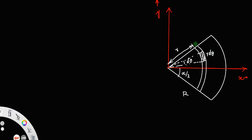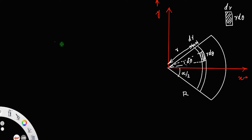Let the thickness of this section be d r. If you take this rectangle, it will be of thickness d r and length r d theta. So the area of the strip, d A, is equal to length times breadth, that is r d theta times d r.